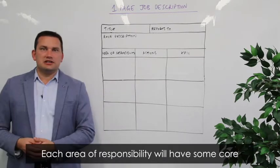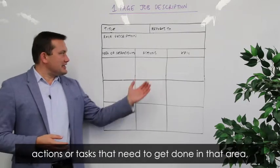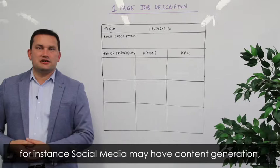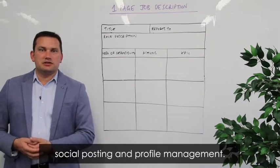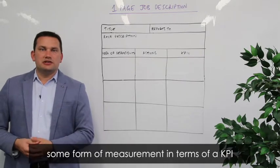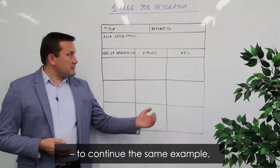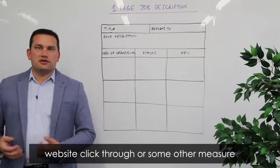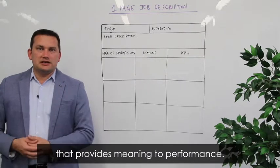Each area of responsibility will have some core actions or tasks that need to get done within that area. For instance, social media may have content generation, social posting, and profile management. Then each area will also have some form of measurement in terms of a KPI — for example, number of social followers, website click-through, or some other measure that provides meaning to performance.